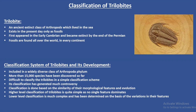Up next is the classification system of trilobites and its development. The trilobites belong to a widely diverse class of Arthropoda, and more than about 15,000 species of trilobites have been discovered so far. Each species exhibits variations in their morphological features, shape and size to a great extent, so it is very difficult to classify trilobites in a simple classification scheme. Moreover, it is assumed that there are a large number of undiscovered trilobite fossils, which is why the classification of trilobites within the order has generated much controversy, most of which is still completely unresolved.